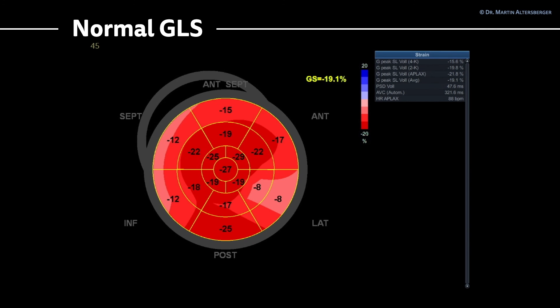Continuing with the bullseye display, we see an overall normal global longitudinal strain. Recall that the normal value should be around minus 18 to minus 20. In this case it is minus 19.1%, confirming a normal global longitudinal strain of the left ventricle. Looking at the bullseye display more carefully, there is some basal reduction in strain in the basal segments, which is an important marker to follow up on. Overall, I would rely on the global longitudinal strain of minus 19%, which is normal.